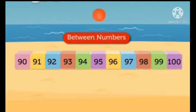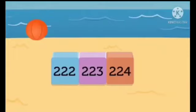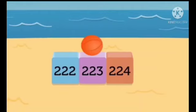We are going to learn between numbers. What are between numbers? The numbers indicated from 91 to 99 are called the between numbers. In this image, you can see there are three numbers: 222, 223, and 224. The between number is 223, where the ball is placed.